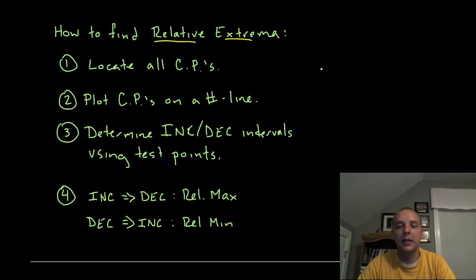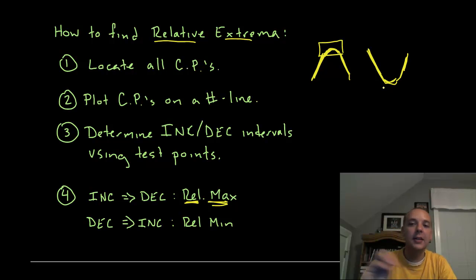Now, just common sense, if you go from an increasing interval, and then you hit a critical point, and then it switches to decreasing right after that in the next interval, then it should be pretty clear you've got a relative maximum. Likewise, if it goes from decreasing, you hit a critical point, and then it's increasing, and it should be noted that it's continuous in that interval, then you've got yourself a relative minimum.